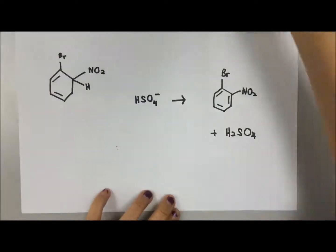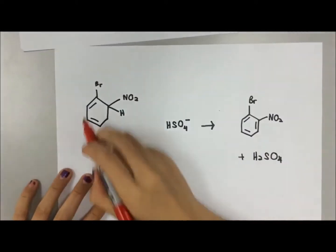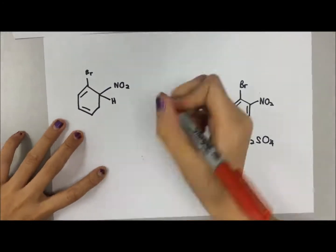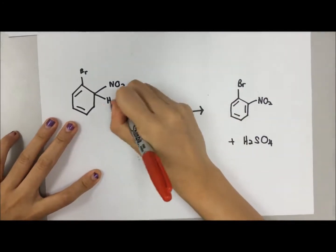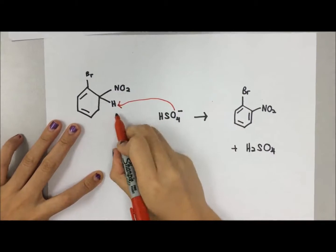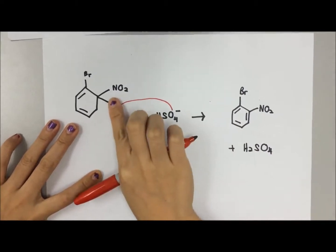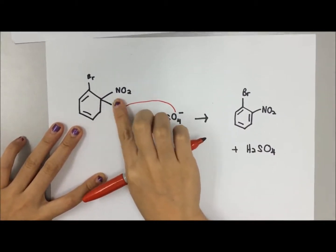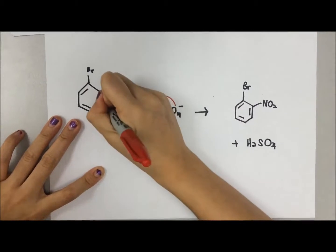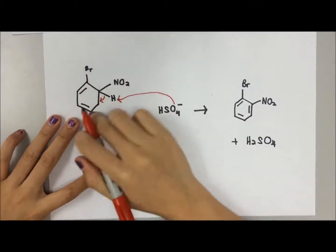So what we need to do is from here we will extract one of the protons or the hydrogen. Once it extracts one of the hydrogens, this bond here will be empty, so we will force the bond back into the benzene ring to form back the aromatic compound.